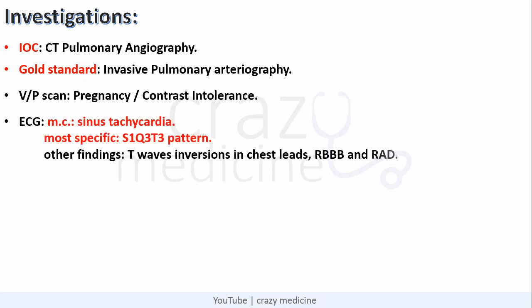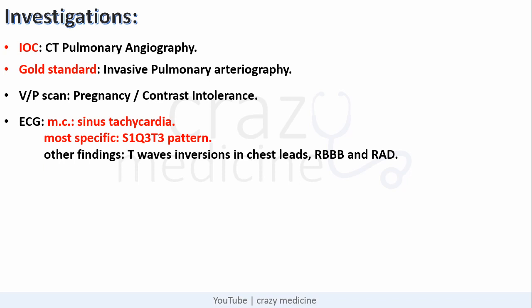Coming to ECG findings: the most common ECG finding is sinus tachycardia, and the most specific is the S1Q3T3 pattern — that is, a deep S-wave in lead 1, pathological Q-wave in lead 3, and T-wave inversion in lead 3. We have already made a full video on ECG for NEAT PG; the link will be in the description. Other findings include T-wave inversion in chest leads, right bundle branch block, and right axis deviation. On transthoracic echocardiography, we can see right ventricular hypokinesia, known as McConnell's sign, with akinesia of the mid-free right ventricular wall with preserved apical contractility.